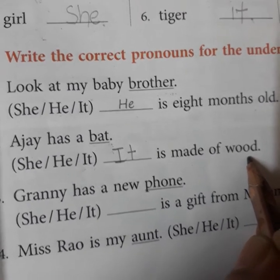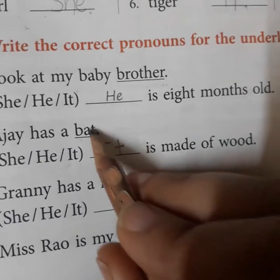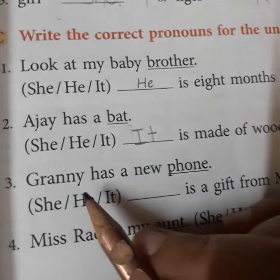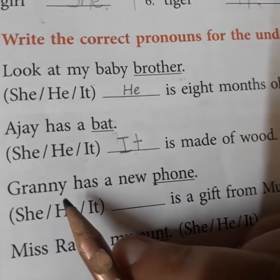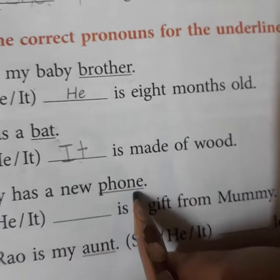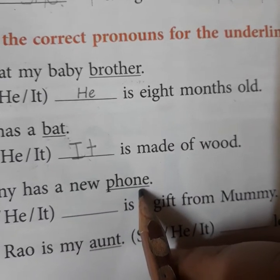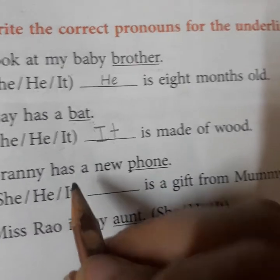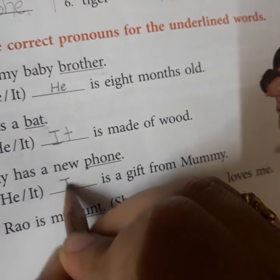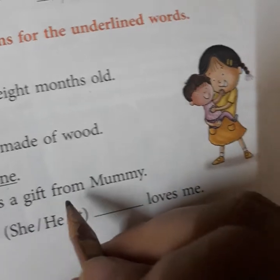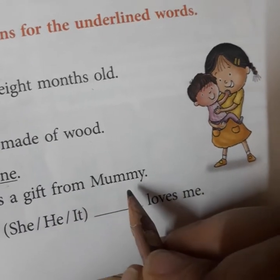Number three: 'Granny has a new phone.' The underlined word is 'phone'. Phone is an object again, so we write 'it'. The sentence becomes: 'It is a gift from Mummy.'